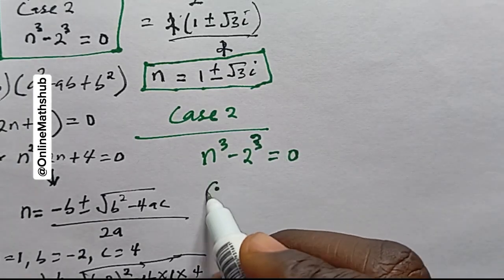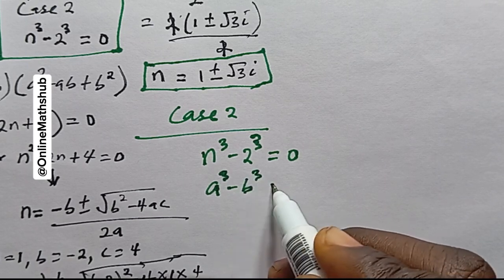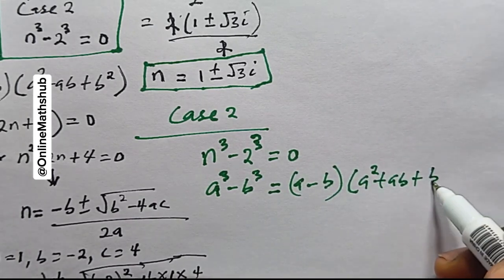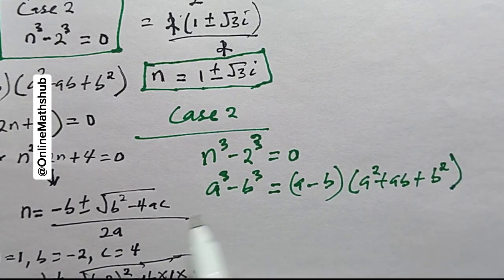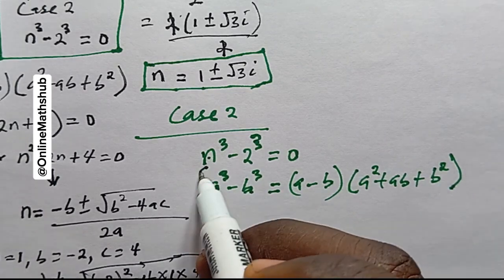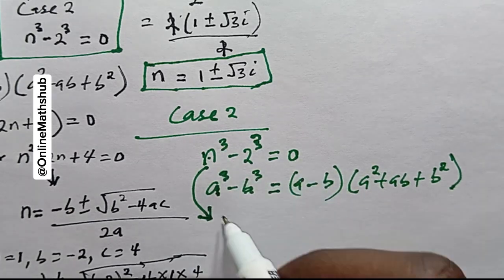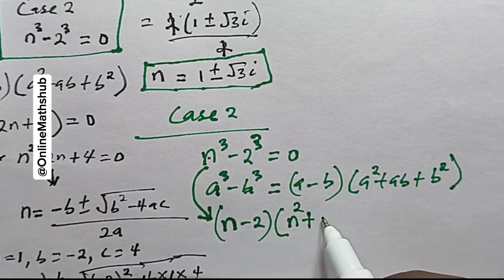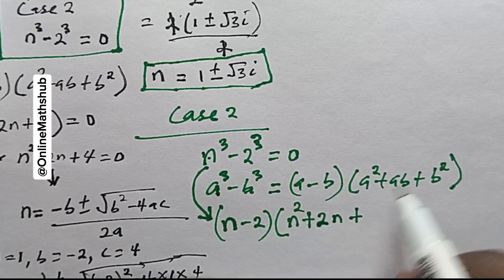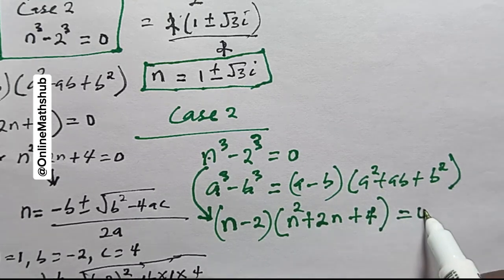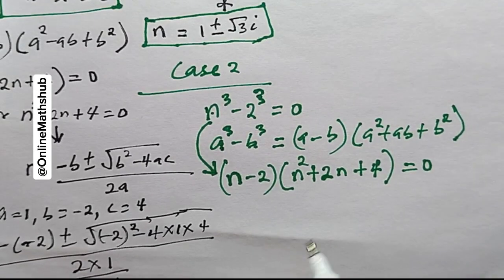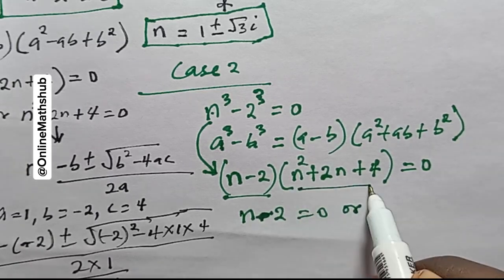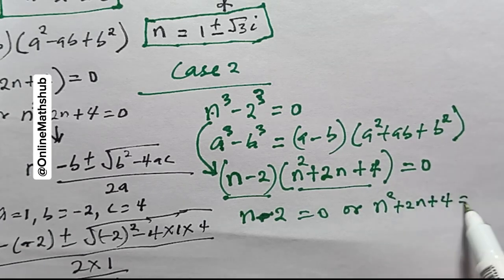In Case 2, n^3 - 2^3 = 0. Using the expansion a^3 - b^3 = (a - b)(a^2 + ab + b^2), where a = n and b = 2, this becomes (n - 2)(n^2 + 2n + 4) = 0. By the zero product rule, either n - 2 = 0 or n^2 + 2n + 4 = 0.